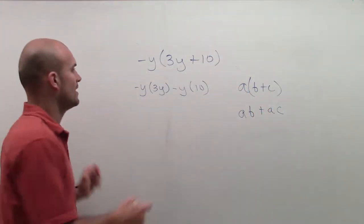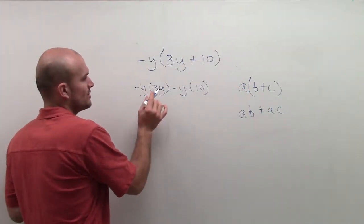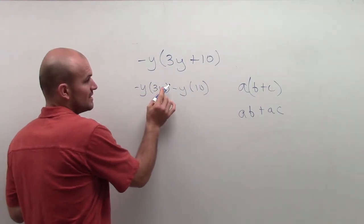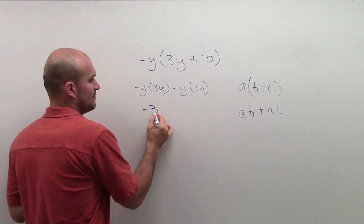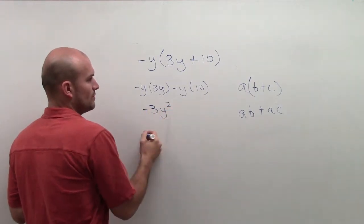Now we just need to simplify. Negative y times 3y—remember, y times y is going to give us y squared. And we'll have negative 1 times 3, which will give us negative 3y squared.